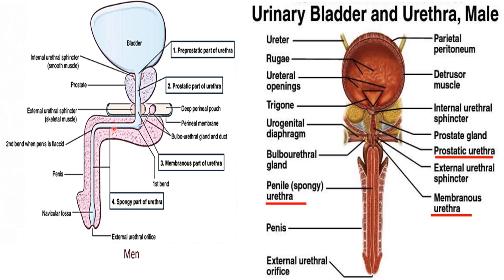In this picture, you can see the four parts of the urethra: pre-prostatic urethra, prostatic urethra within the prostate, membranous urethra surrounded by the external urethral sphincter, and posterior to it, the bulbourethral gland. The duct from the urethral gland opens into the spongy urethra. The spongy urethra has two bends — the first bend at the beginning, and the second bend at the beginning of the penile shaft — and it opens into the external urethral orifice.